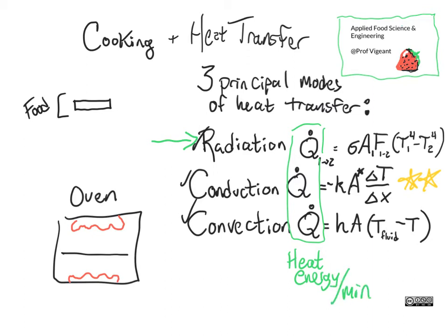Looking at radiation, we have an area — that's what capital A is. And in this case, as is also the case in convection, this means the area of our food that is exposed to this heat transfer mechanism.